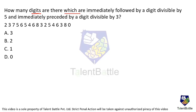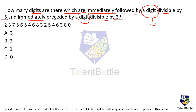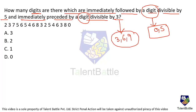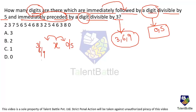How many digits are there which are immediately followed by a digit divisible by 5 and immediately preceded by a digit divisible by 3? The digits divisible by 5 are 0 and 5 only. The digits divisible by 3 are 3, 6, and 9. So we need digits where the next digit is 0 or 5 (followed), and the previous digit is 3, 6, or 9 (preceded). Let's identify how many digits satisfy this condition.